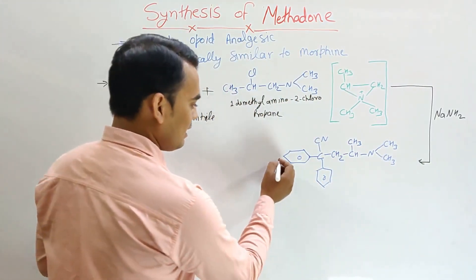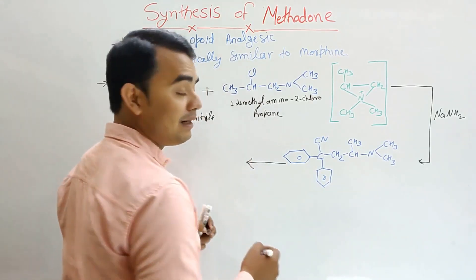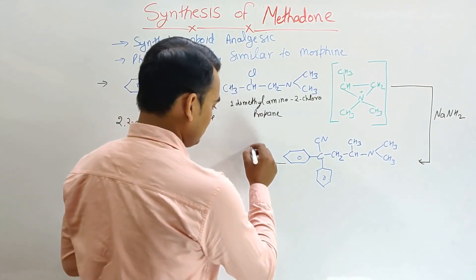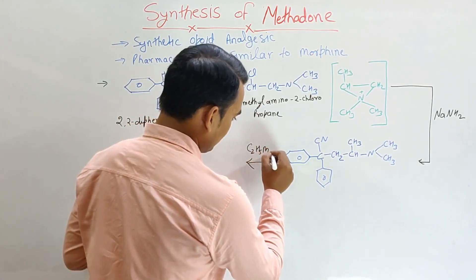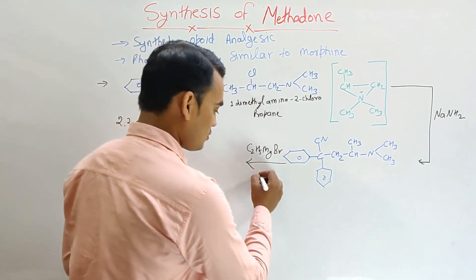Now this intermediate, when again reacted in the presence of ethyl magnesium bromide, that is C2H5MgBr, and this reaction takes place in the presence of soda lime, NaOH.